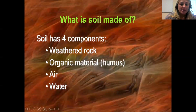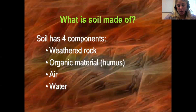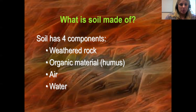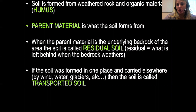Soil also has air and water as part of it as well. This organic material is what is going to help with plant growth — without it, plants would not be able to grow. So soil is formed from weathered rock and organic material; it's a mixture.